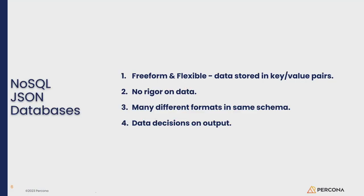The NoSQL JSON databases — their big feature is they're free-form and flexible. Data is usually stored in a key-value pair. There's no rigor on the data. There's many different formats; you could have different formats in the same schema. And there's no decisions on the data until output.